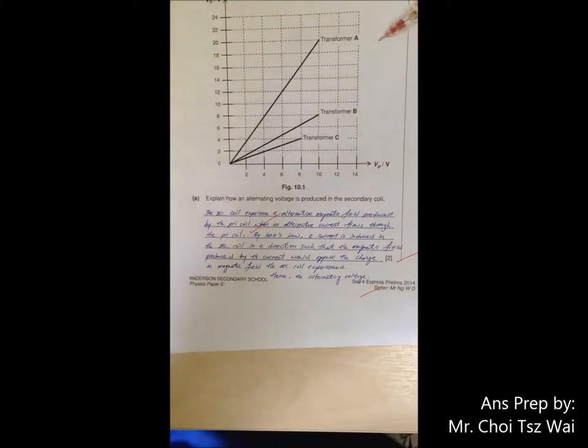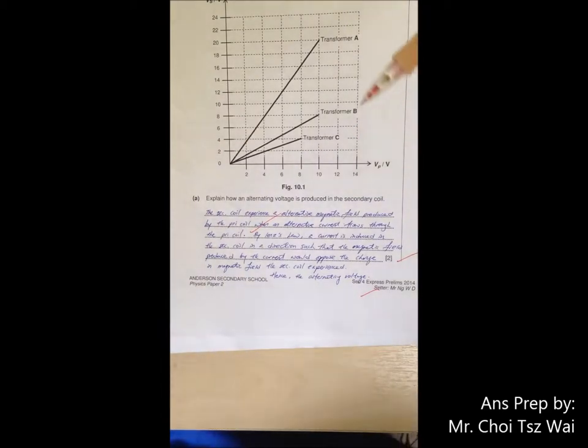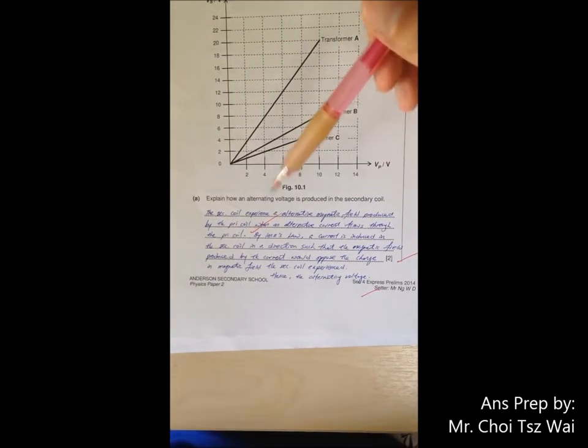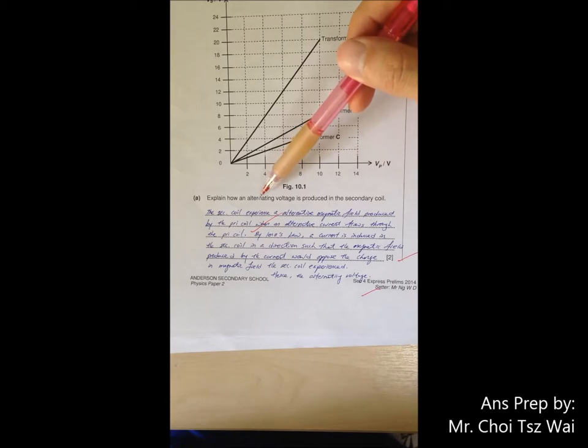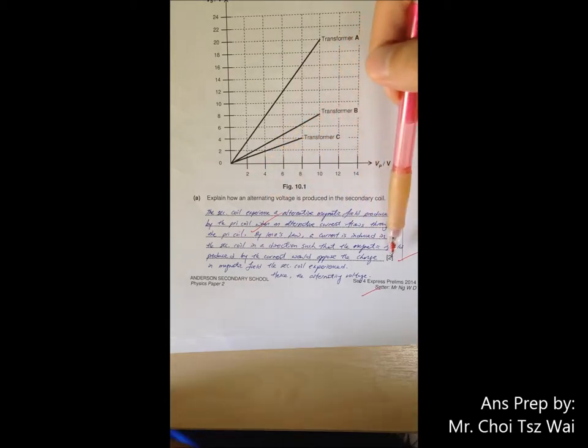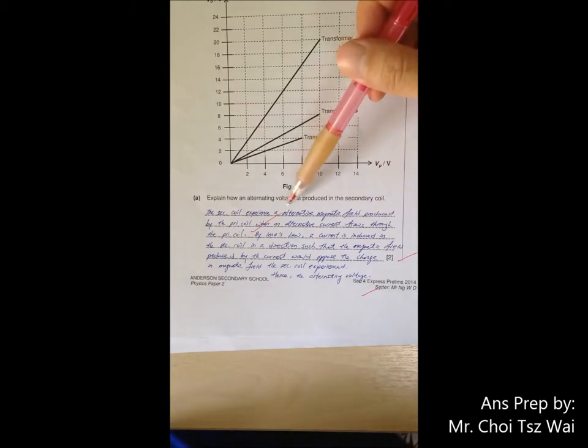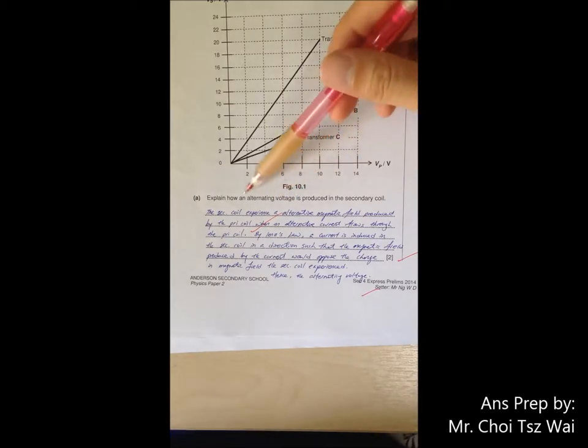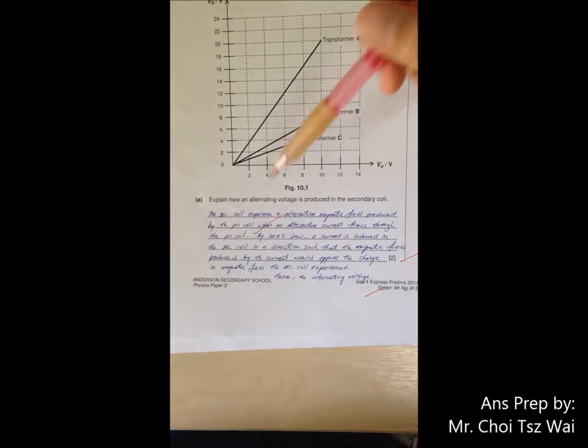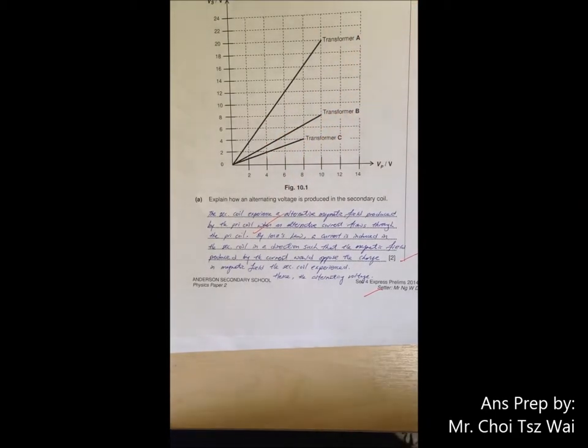They have detailed explanation on how the alternating voltage is produced. The keyword here is that you have to address why is it alternating. So you have to make reference with Lenz's law because it's just two mark. So I don't think you need to use Faraday's law to explain why is there induced voltage here. So just pay attention to the alternating work and you should be fine.